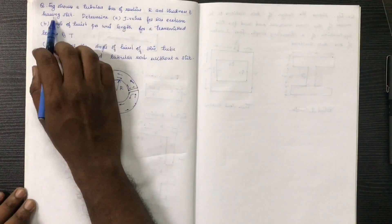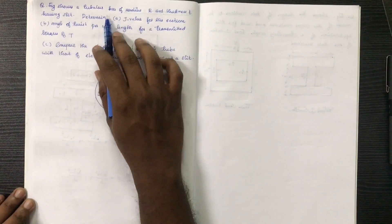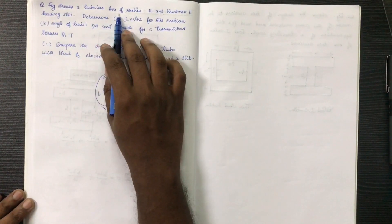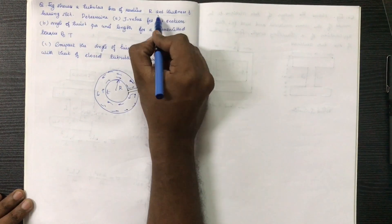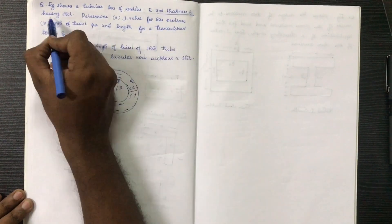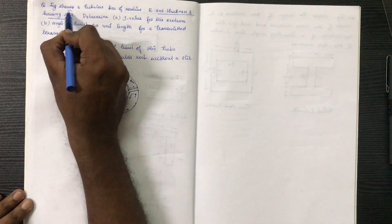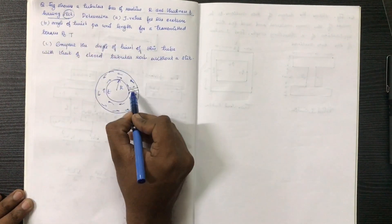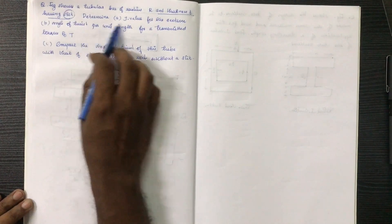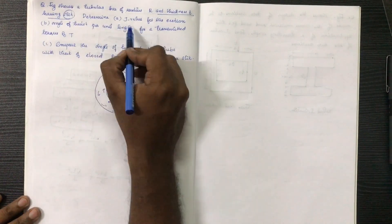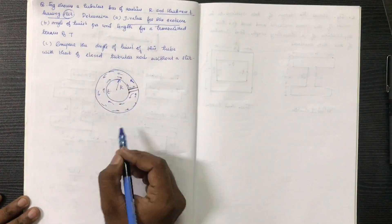Here is a tubular bar of radius r and thickness t having a slit. Determine the J value for the section.